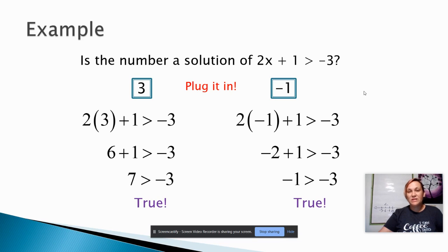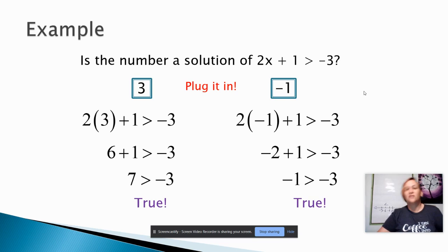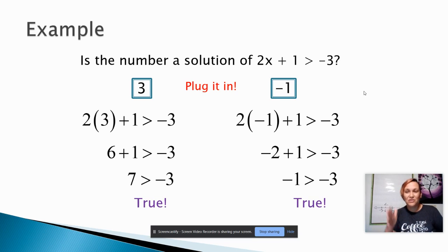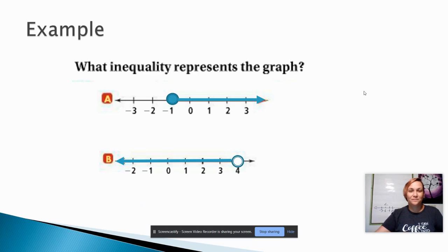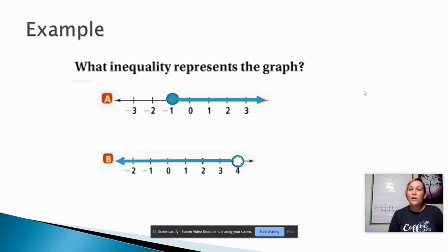So it is possible that more than one number could be a solution. It's very important that you're checking all of your answers. To represent all of the solutions of an inequality, we can draw a graph on a number line.